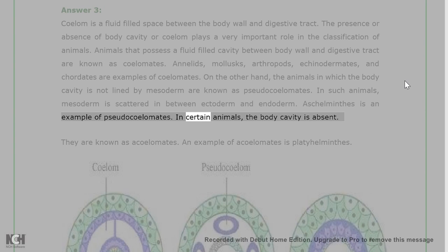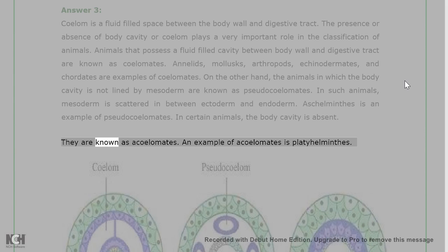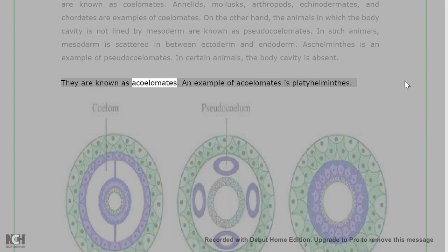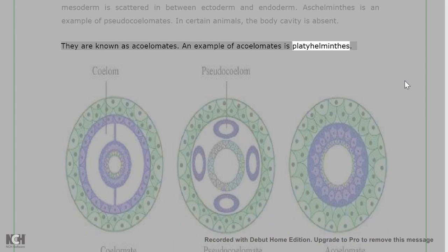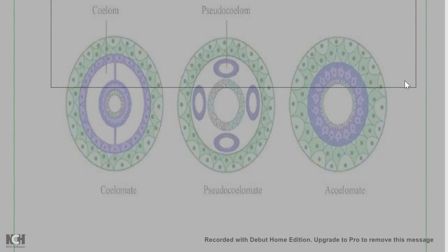In certain animals, the body cavity is absent. They are known as acoelomates. An example of acoelomates is Platyhelminthes.